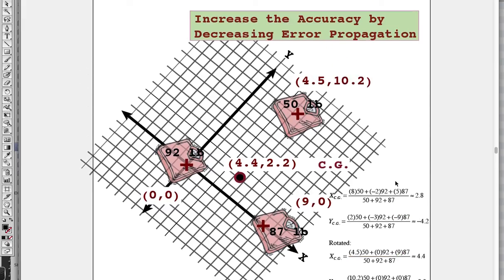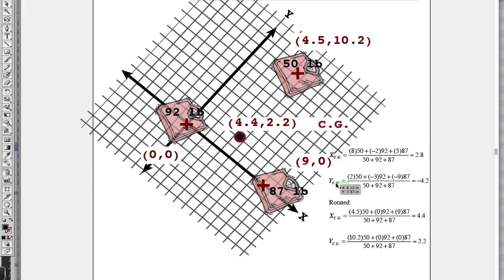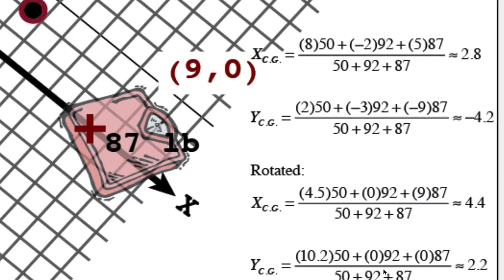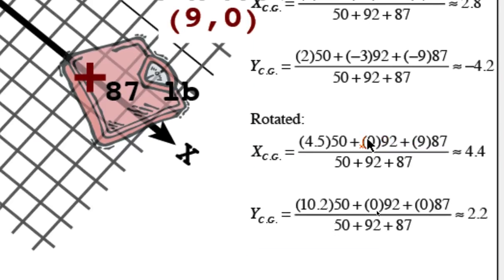If I look at the calculation for both systems—here's the original X and Y CGs, here is the rotated coordinate system—you'll notice the zero appears right here. Let me zoom in on this. The zero appears in this term, so this middle term goes away, which means the uncertainty goes away. And in the Y CG we get rid of two terms that go away, and the uncertainties go away as well.